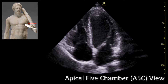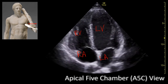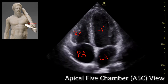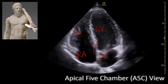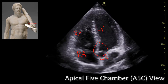Let's label some of the structures that we're looking at. This is the left ventricle, this is the left atrium, this is the right atrium, and this is the right ventricle. And you will see now by tilting the probe anteriorly, you're going to have the left ventricular outflow tract appear over here. And this is the aortic valve.